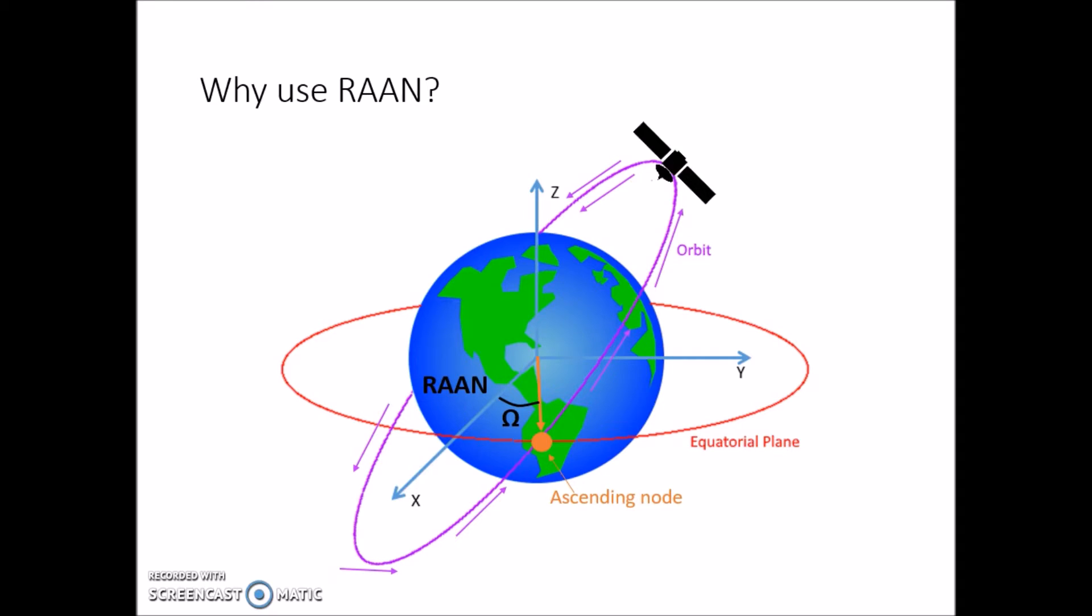You need both inclination and RAAN to show how the satellite orbits. Inclination only shows angle from the equatorial plane, but there are still an infinite number of planes without inclination. While inclination shows you the angle from the equatorial plane, RAAN shows the position about the poles. With these two points, you can locate the orbital plane.